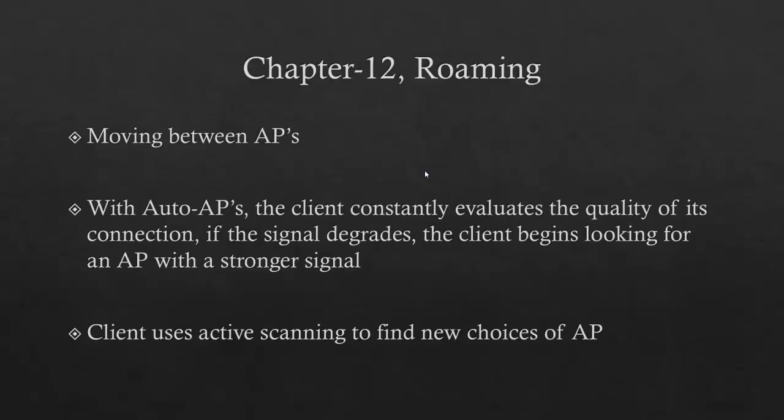Chapter 12: roaming. Roaming is moving between access points. With autonomous access points, the client constantly evaluates the quality of the signal and connection. If the signal degrades to a certain point, the client begins looking for an access point with a stronger signal. At what point does the wireless client start looking for a new signal? It depends on the client. Three laptops from three different manufacturers moved away from an access point — one will lose signal before the other two. It all depends on the manufacturer. The wireless client uses active scanning to find new access points to connect to.